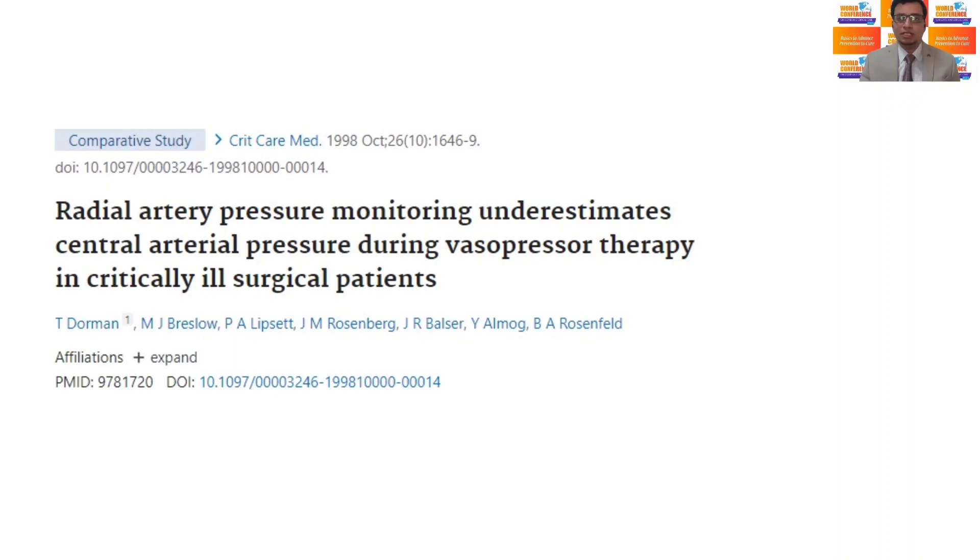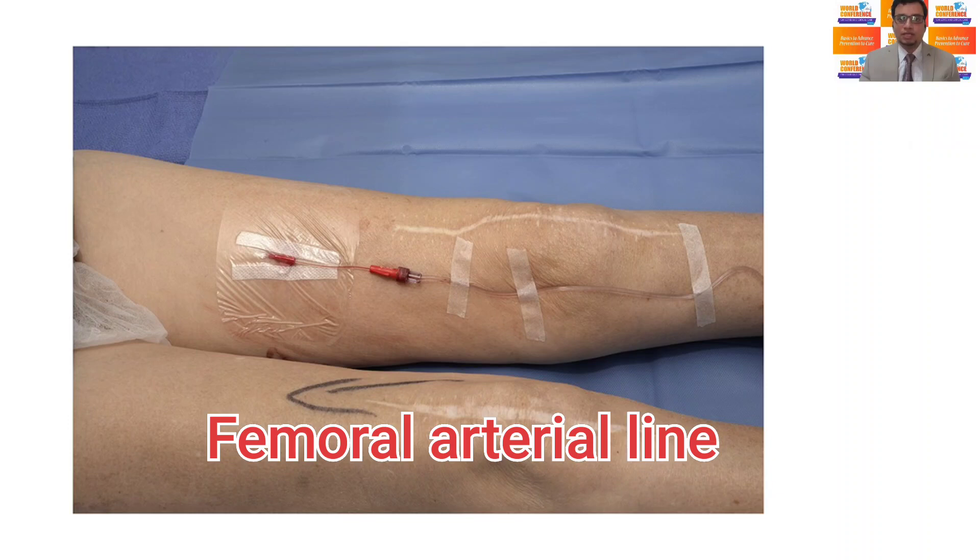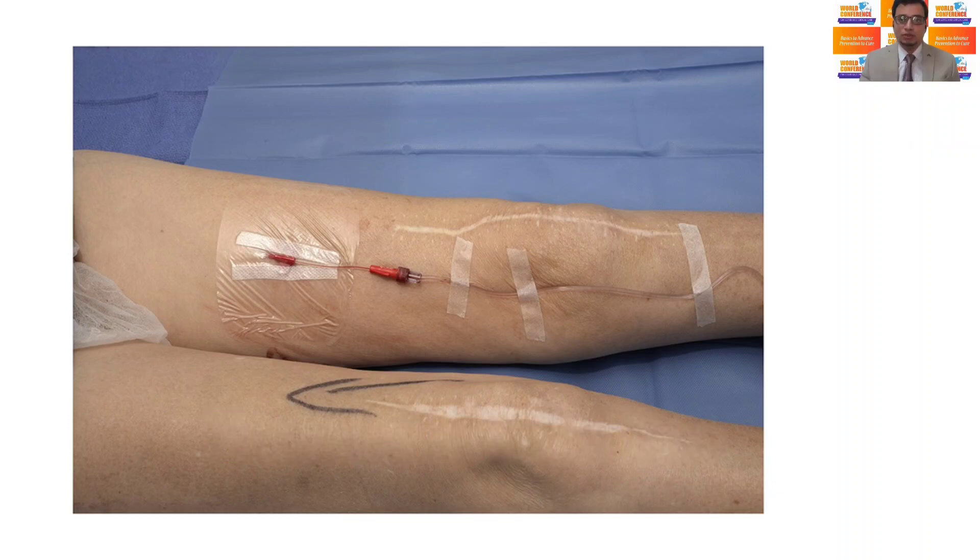When the patient is on high-dose vasopressor therapy, the radial arterial site underestimates the intra-arterial blood pressure monitoring and therefore, femoral arterial site is advisable to use in such scenarios to optimally titrate the vasopressors.